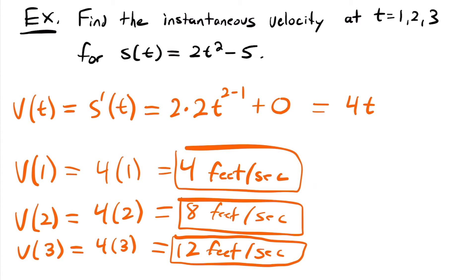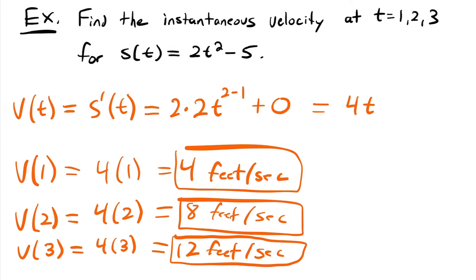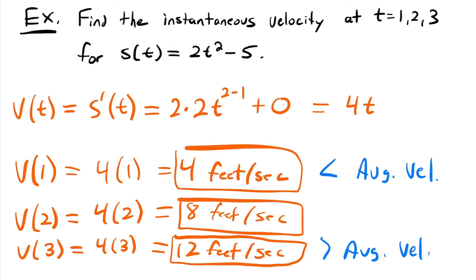When we looked at the average velocity for this position function from time 1 to time 3, we found it was 8 feet per second. Observing what's happening: the instantaneous velocity at the lower endpoint, time equals 1, is less than our average, and at the upper endpoint, time equals 3, it's greater. The velocity at the midpoint, time equals 2, equals the average velocity of 8. This shows the relationship between average and instantaneous velocity around the same time frame.